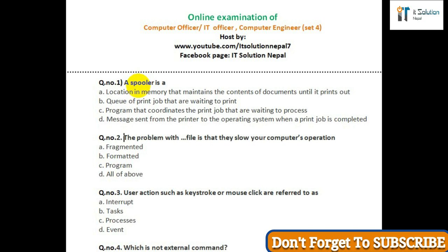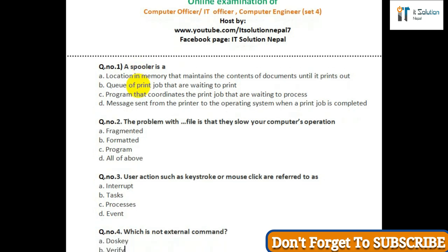Question number two: The problem with direct file is that they slow your computer's operation — option A: fragmented; option B: formatted; option C: program; option D: all of the above. Question number three: User actions such as keystroke or mouse click are referred to as — option A: interrupt; option B: task; option C: process; option D: event.